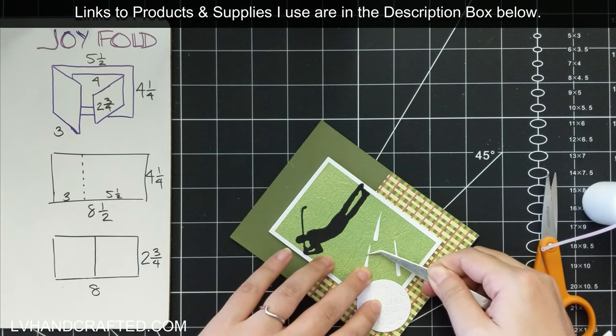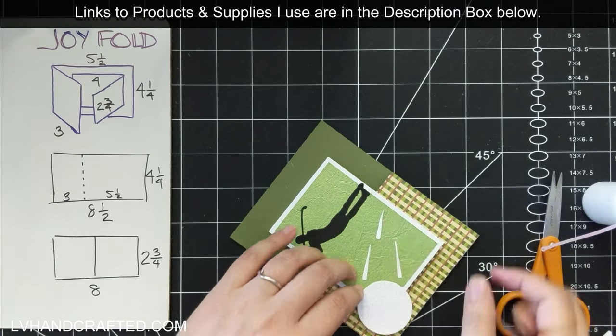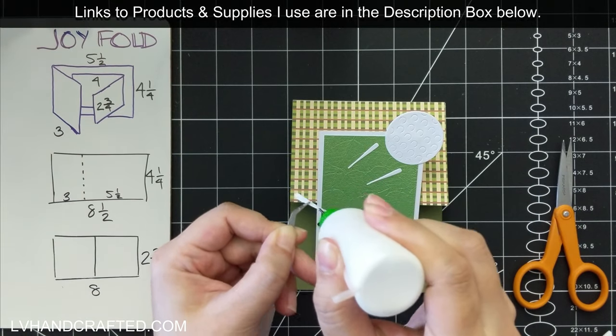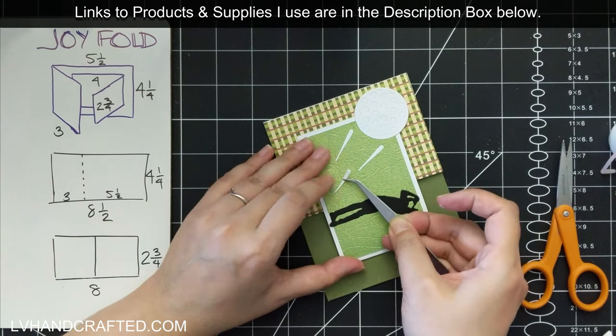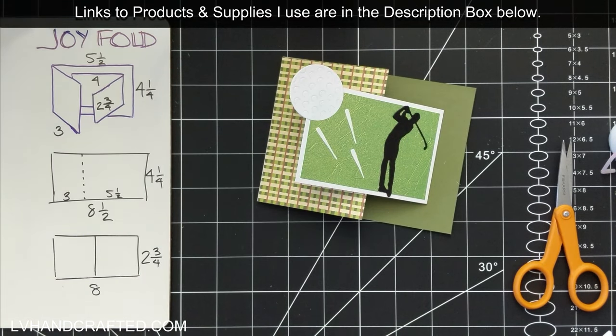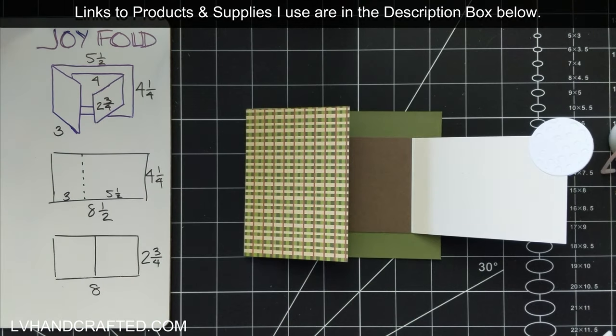And it helps to kind of tell the story a little bit better, instead of just having the golf ball kind of just hang out in that upper left hand corner. It makes it seem a little bit as if it's actually coming from where the golf player hit it off the ground. So that's going to be the front.